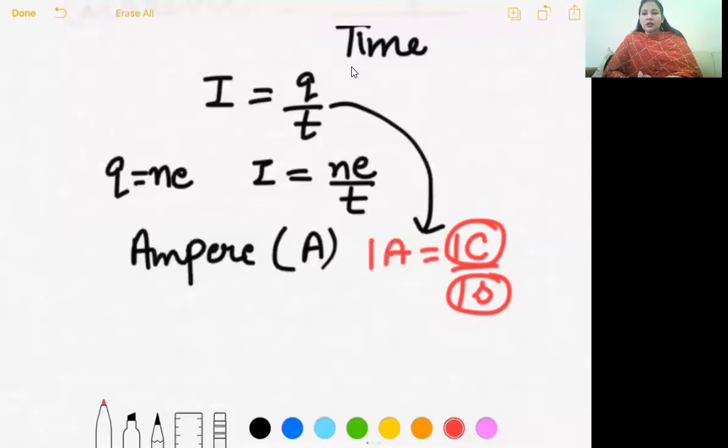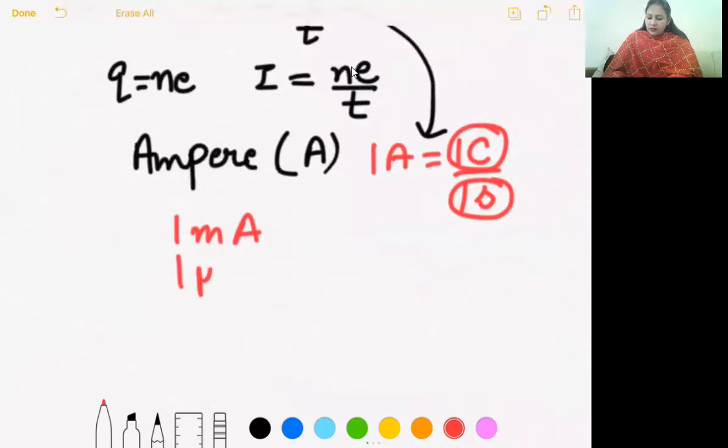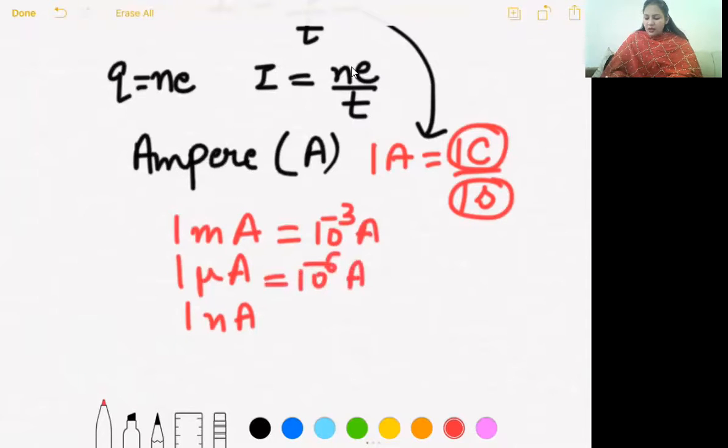Other units that we frequently use: milliampere, then microampere, nanoampere. You already know their values. Milliampere is 10 raised to power minus 3 ampere, microampere is 10 raised to power minus 6 ampere, and nano means 10 raised to power minus 9 ampere. So milli, micro, nano. These are some commonly used units of current in numerical problems.